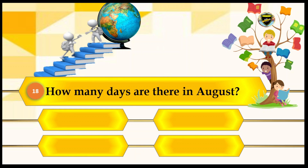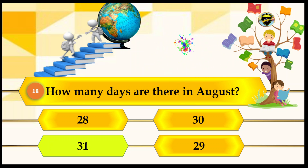How many days are there in August? Let's see the options: 30, 31, and 39. The answer is 31. Let's lock 31 and see if it's correct. That is the answer, so let's move on to the next question.